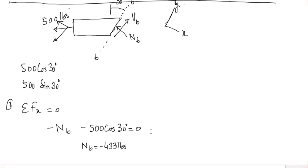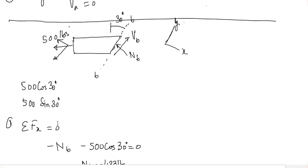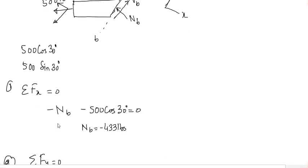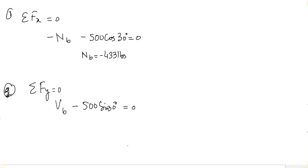Applying the second condition of equilibrium, summation of all forces in the y direction equals zero. There are two forces in the y direction: VB along the positive y axis and 500 sin 30° along the negative y axis. So VB minus 500 sin 30° equals zero, giving VB equal to 250 pounds. NB is the normal force at section BB equal to 433 pounds, and VB is the shear force at section BB equal to 250 pounds.